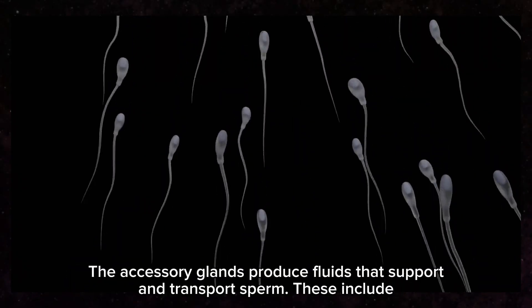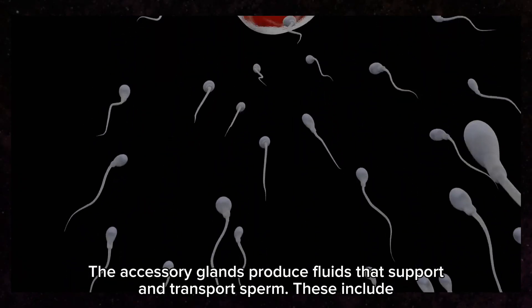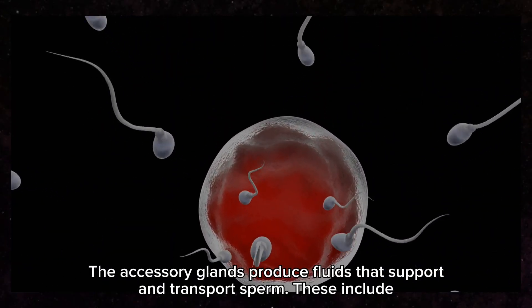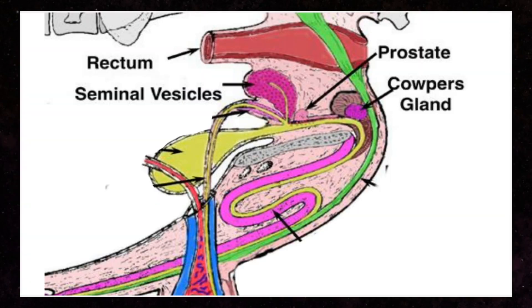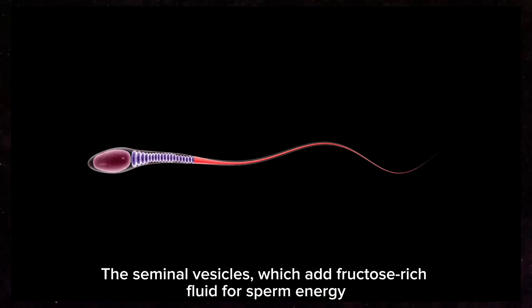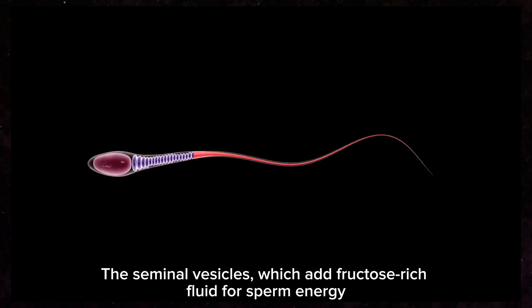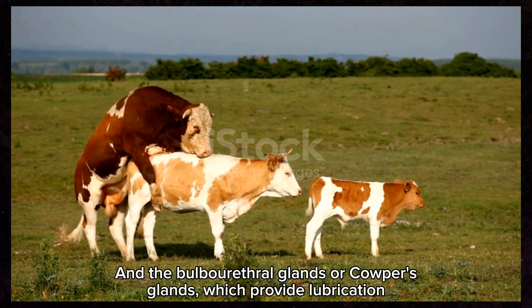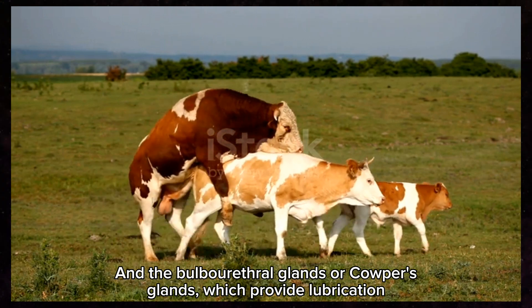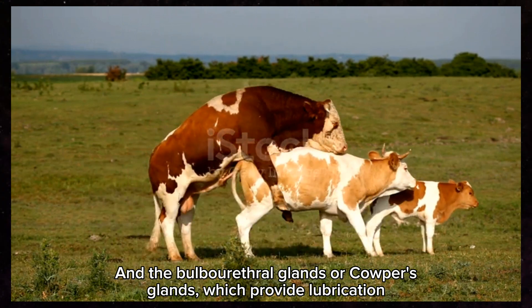The accessory glands produce fluids that support and transport sperm. These include the seminal vesicles, the prostate gland, and the bulbo-urethral glands. The seminal vesicles add fructose-rich fluid for sperm energy. The prostate gland produces alkaline fluid to neutralize the female reproductive tract's acidity, while the bulbo-urethral, or Cowper's, glands provide lubrication.